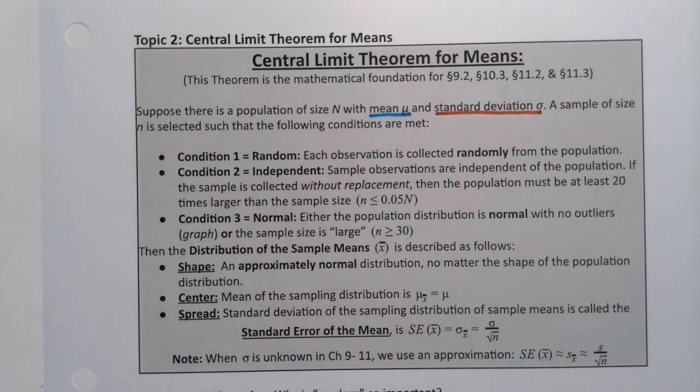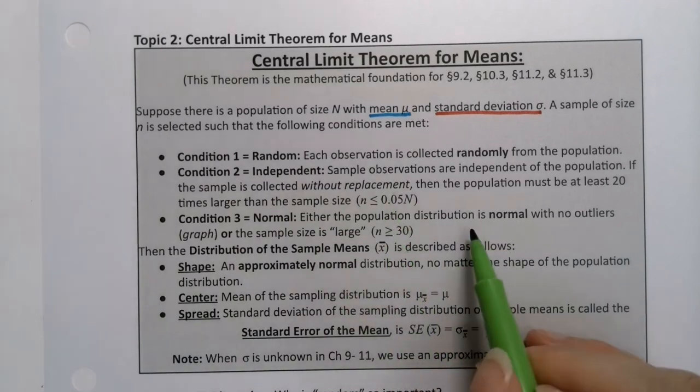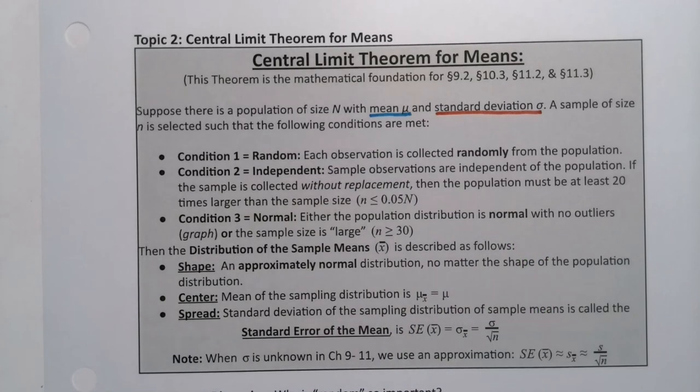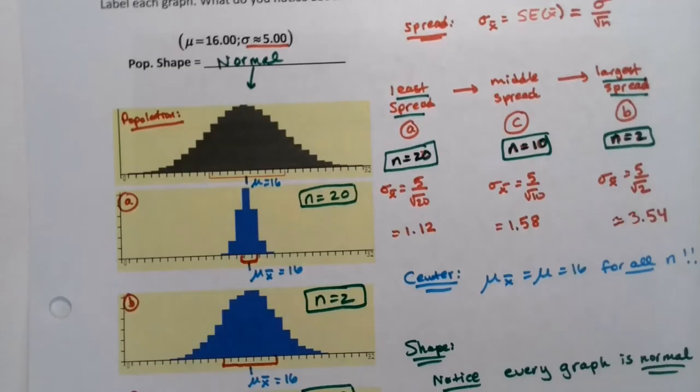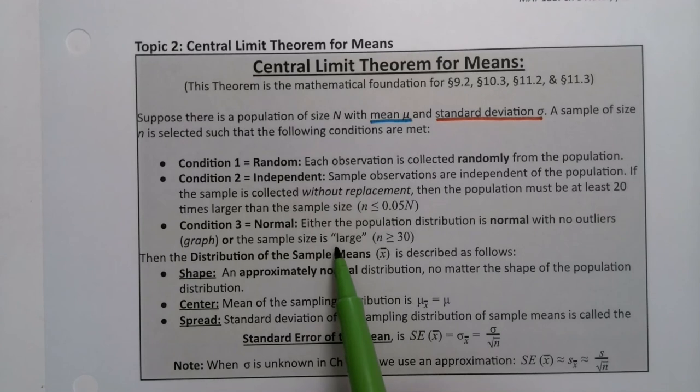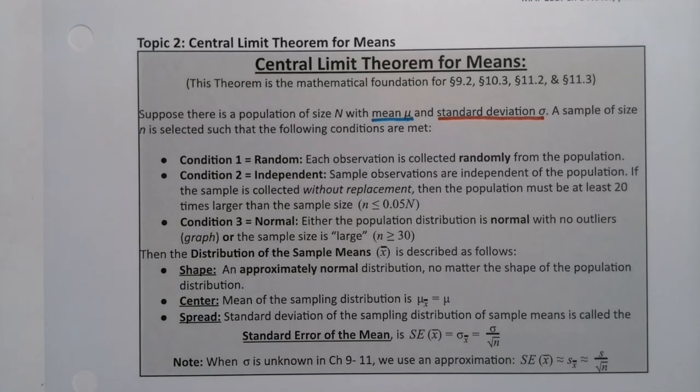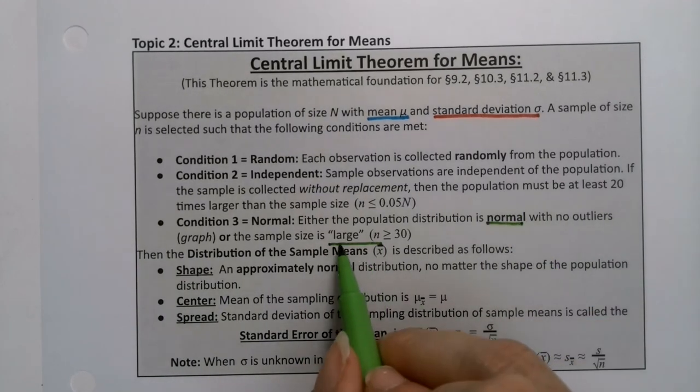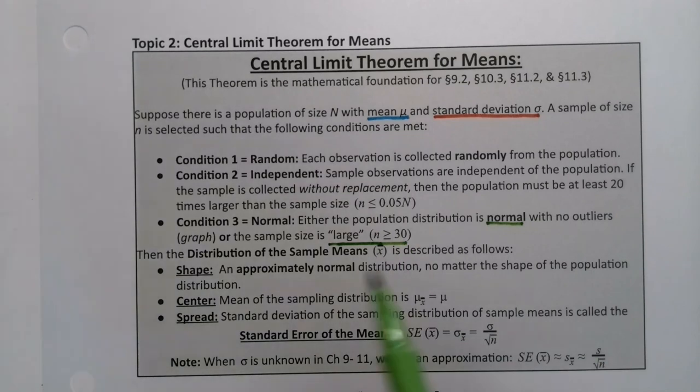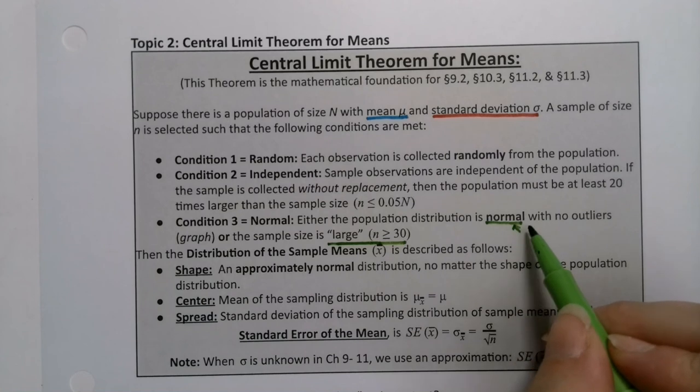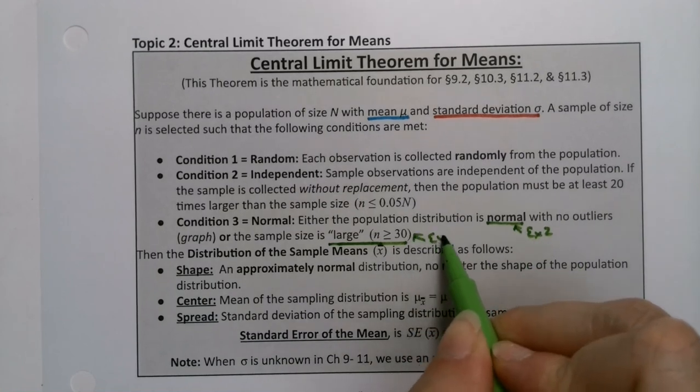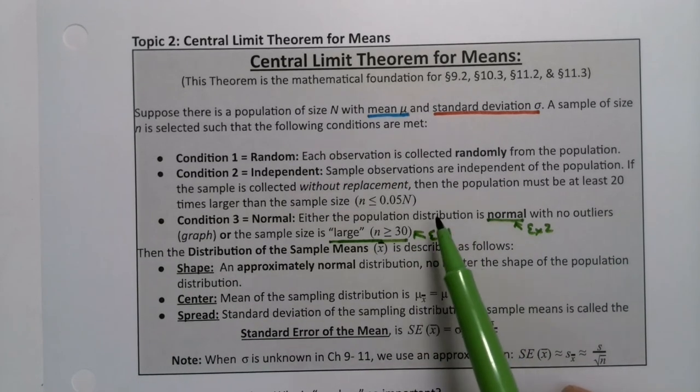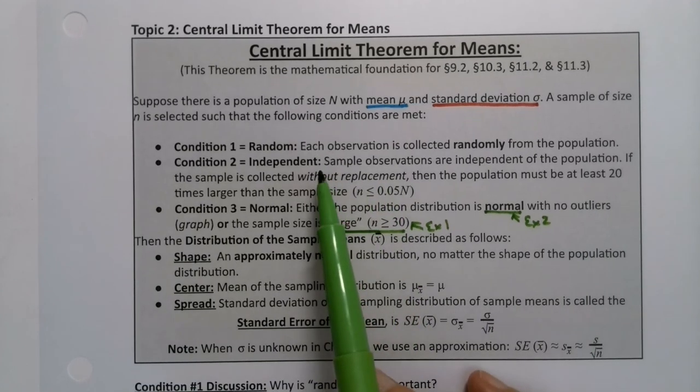And then we want it to work out to be normal. Now, I'll go back to the random independent in one second, but look at the normal piece. It says either the population is normal to begin with, right? And you can tell that from a graph. So we saw that in example two. In example two, this population is normal. So if its population is normal, then any sample you grab, any sampling distribution you grab is normal. Or the sample size is large. So either you want it to be normal to begin with, or you want n greater than or equal to 30.